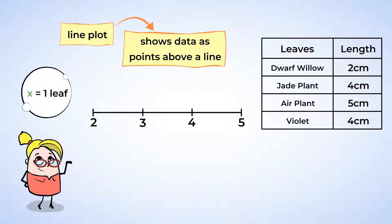Now we will use an X to represent one leaf. Now we will look at each measurement and put an X to represent it on the number line. First, the dwarf willow leaf was two centimeters long, so put an X above the two. Next, the jade plant leaf was four centimeters long, so put an X above the four. For the air plant, put an X above the five to represent five centimeters. Lastly, put another X above the four to represent the violet plant's leaf, which was also four centimeters. Great work!